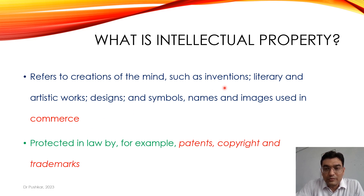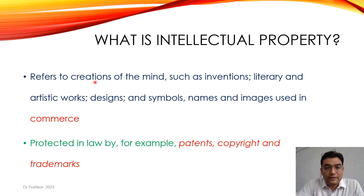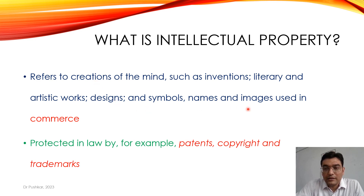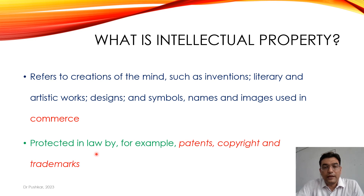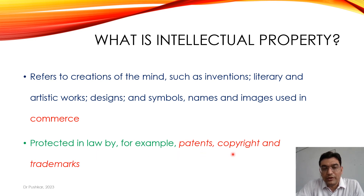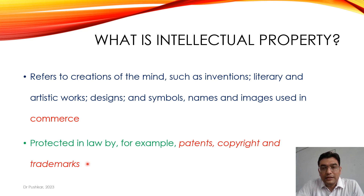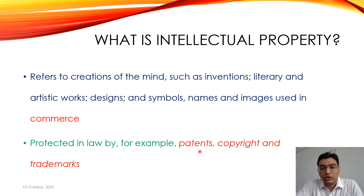So if you have invented something — if you have some literary work, artistic work, design, symbol, name, or images which you are using in commerce — then you can apply for protection of the law. You can apply for patents, copyright, or trademarks. These are all types of intellectual property: patents, copyright, and trademarks.